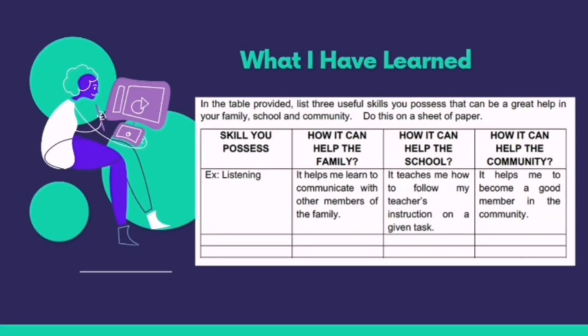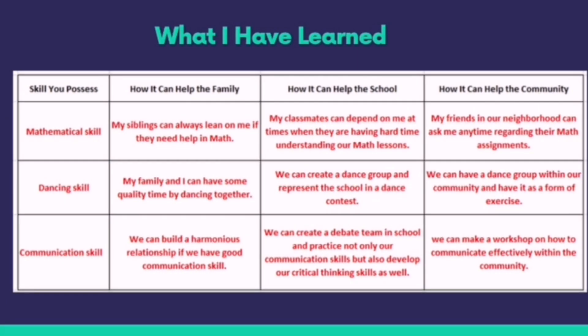For 'What I Have Learned,' in the table provided, list three useful skills you possess that can be a great help to your family, school, and community. For example, the skill of listening: it helps me learn to communicate with other members of the family; in school, it teaches me how to follow my teacher's instructions on a given task; and in the community, it helps me become a good member. Another example: mathematical skill. My siblings can always lean on me if they need help in math. My classmates can depend on me when they are having a hard time understanding math lessons. And in the community, my friends in our neighborhood can ask me anytime regarding their math assignments.